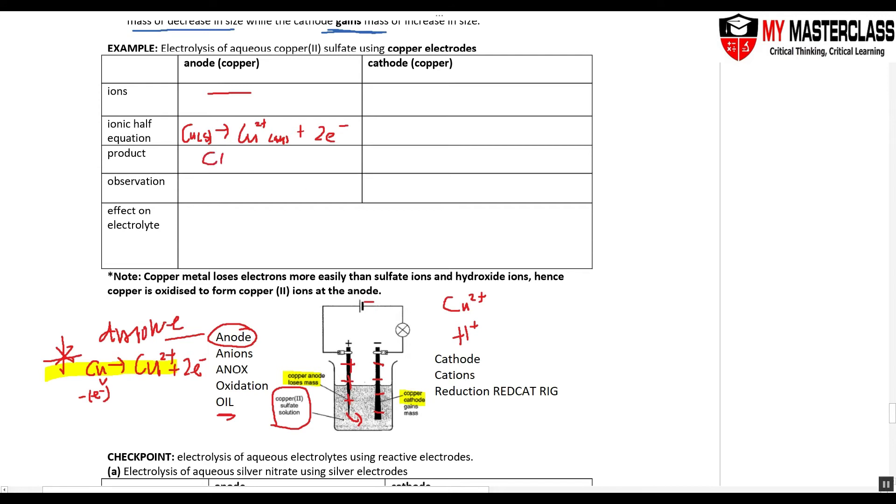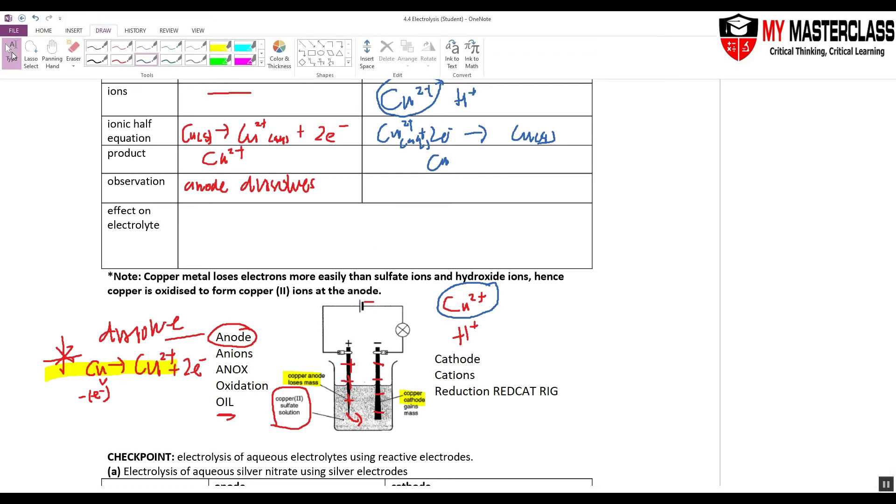So your products are just Cu2 ions. And your observation because your anode dissolves, so the anode becomes smaller. So looking at these cations that are inside, you have your copper 2 hydrogen ions. So what will get preferentially discharged is my copper 2. So the ions inside this one you can write Cu2+ and H+. And it is the one that will get circled. So my Cu2+ plus 2 electrons form Cu. So the product is copper. The observation of copper. Write this down.